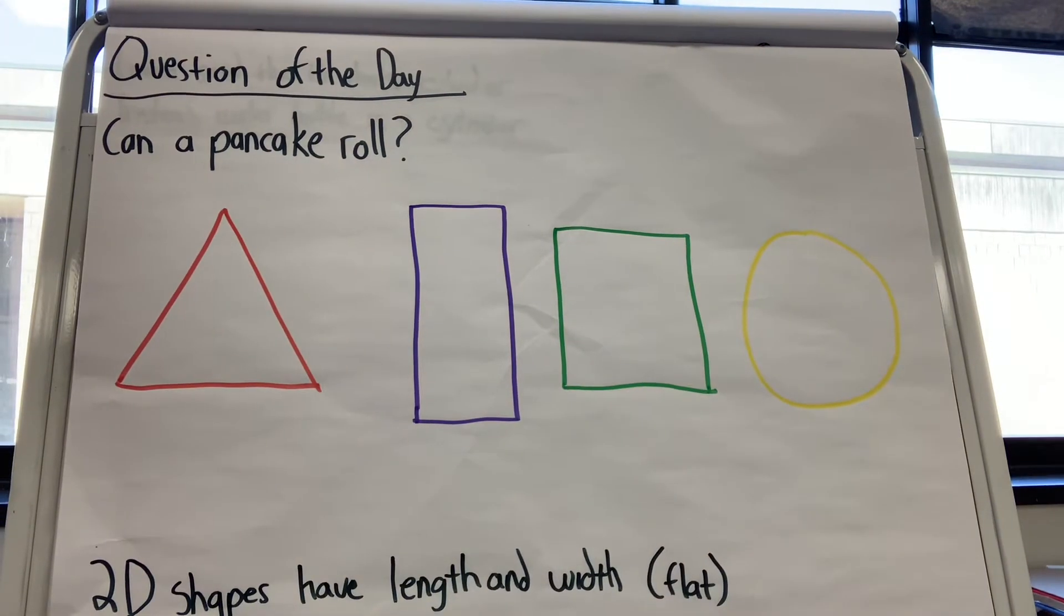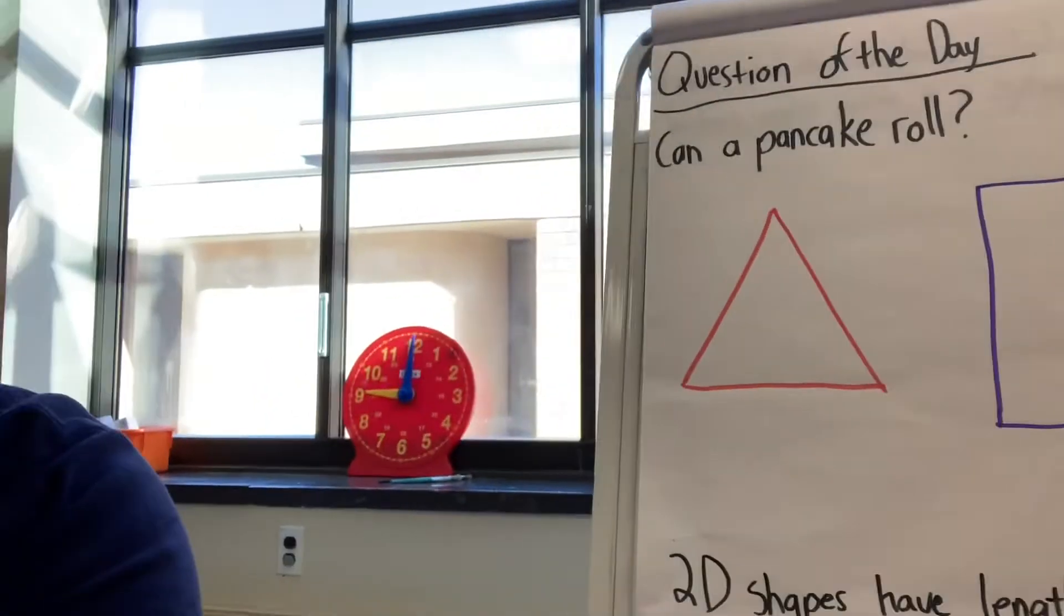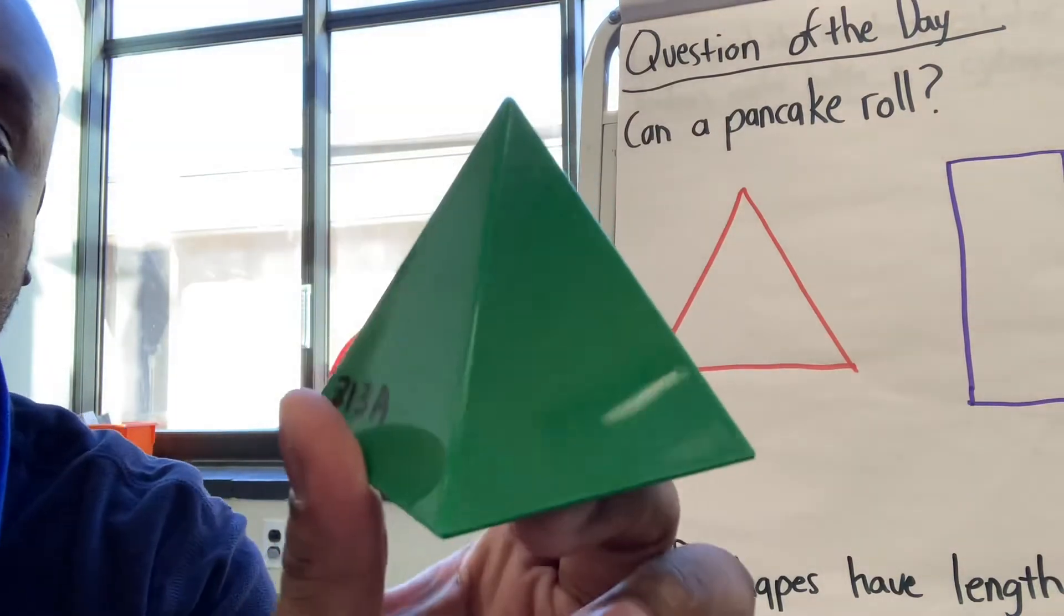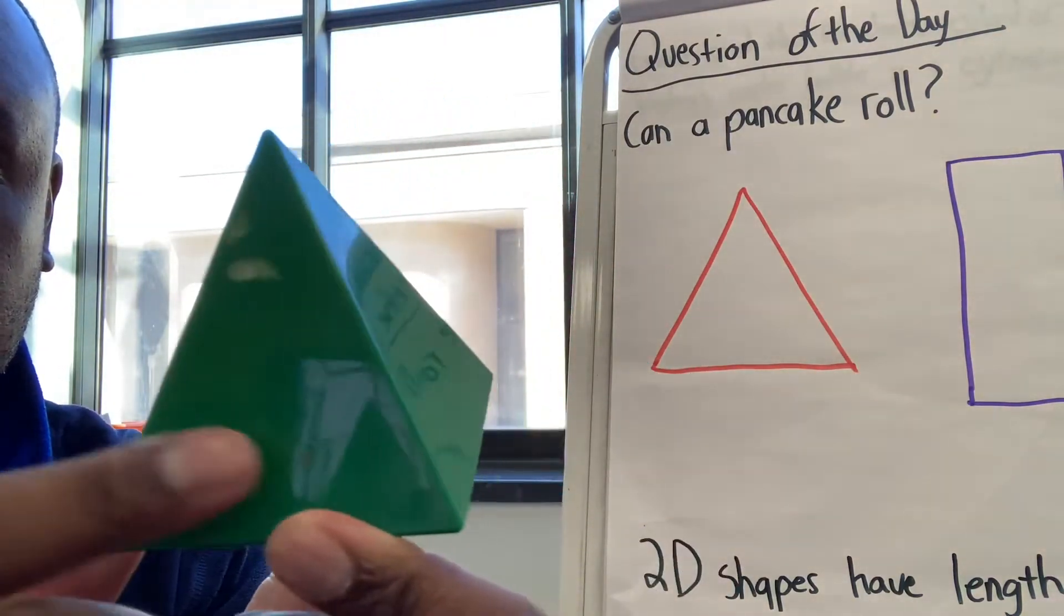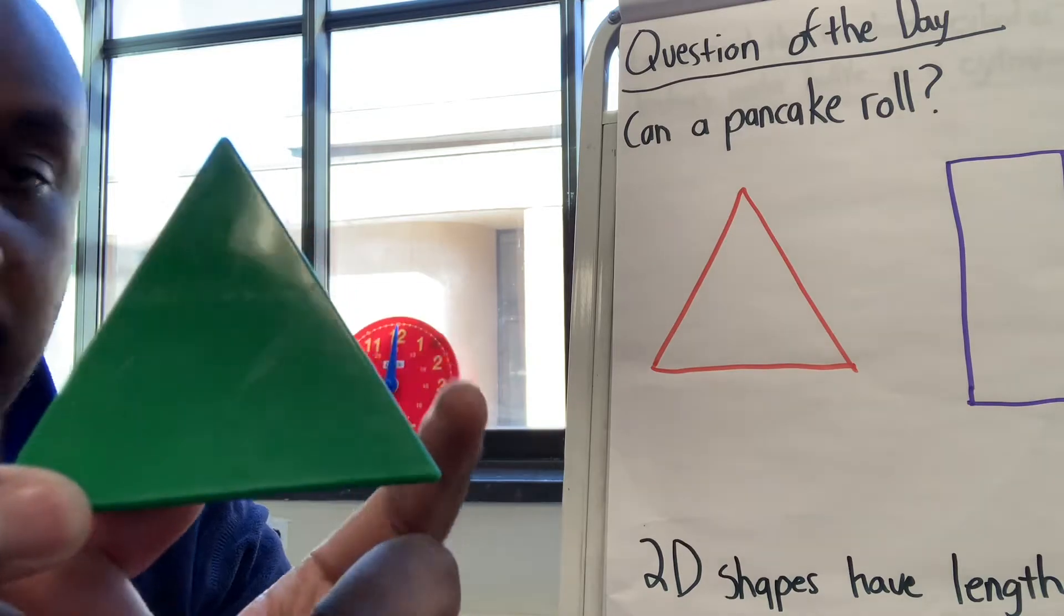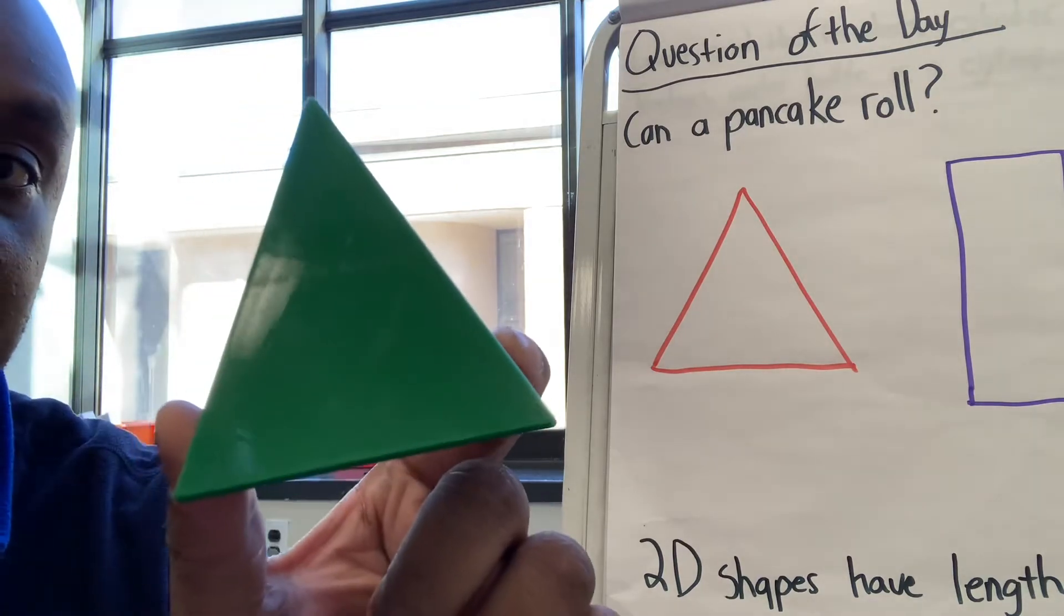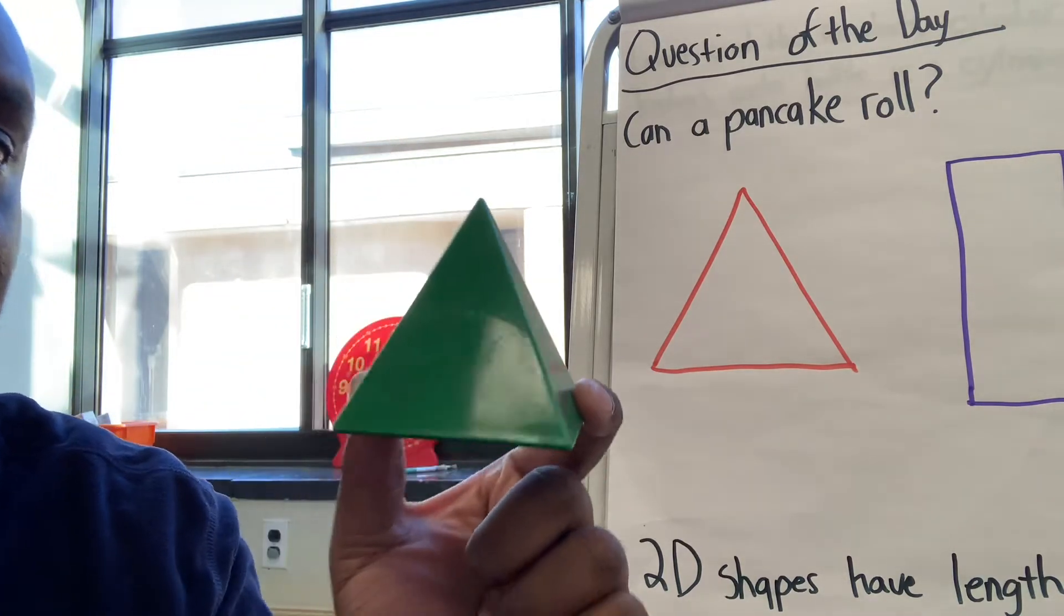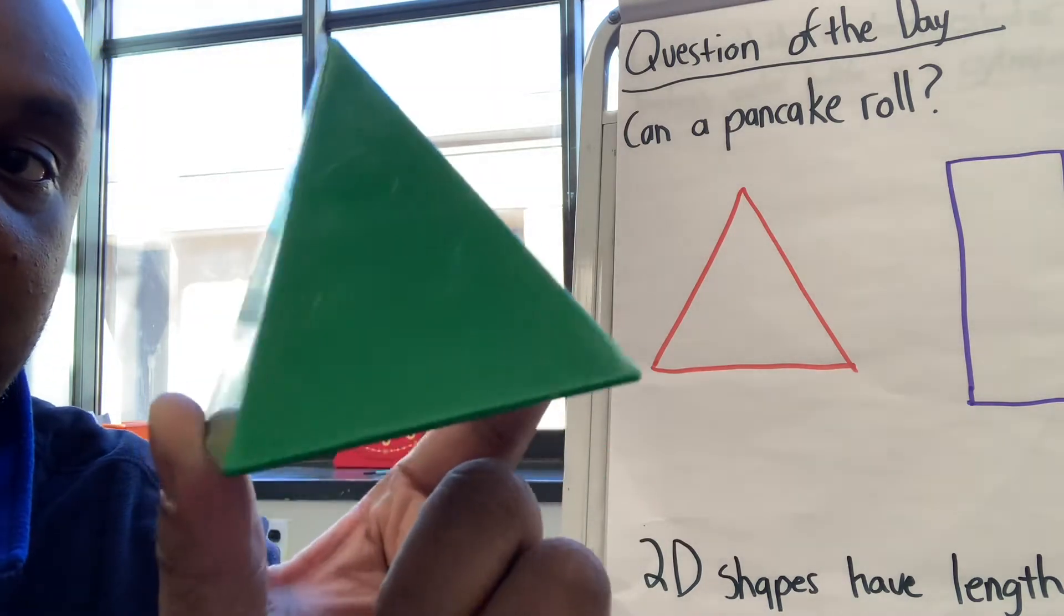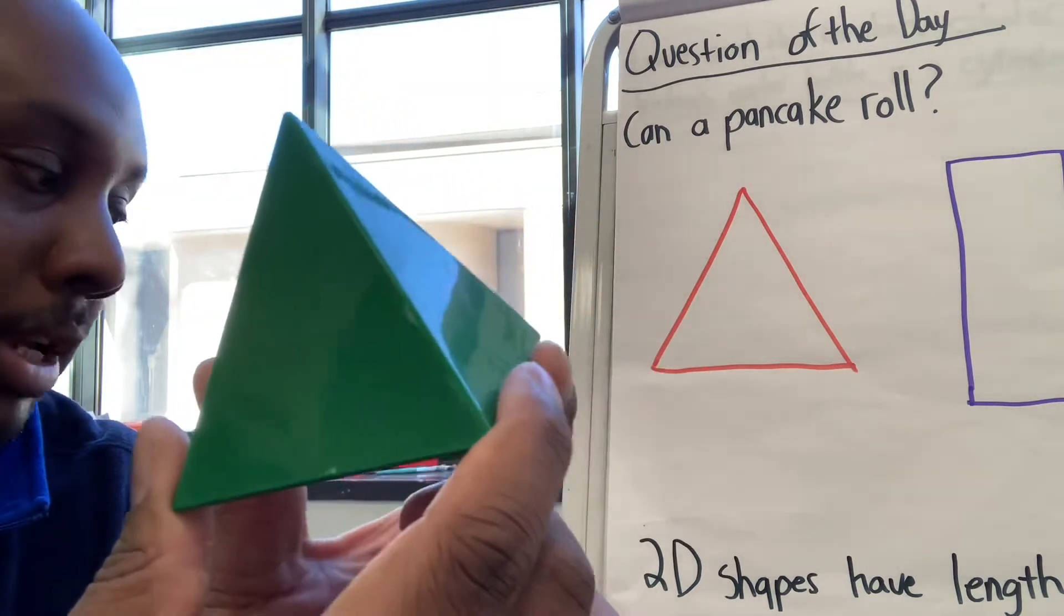Now let's look at some 3D shapes. What shape is this? It's a pyramid. It's not a triangle. It looks like a triangle when I leave it like this. But it's a pyramid.